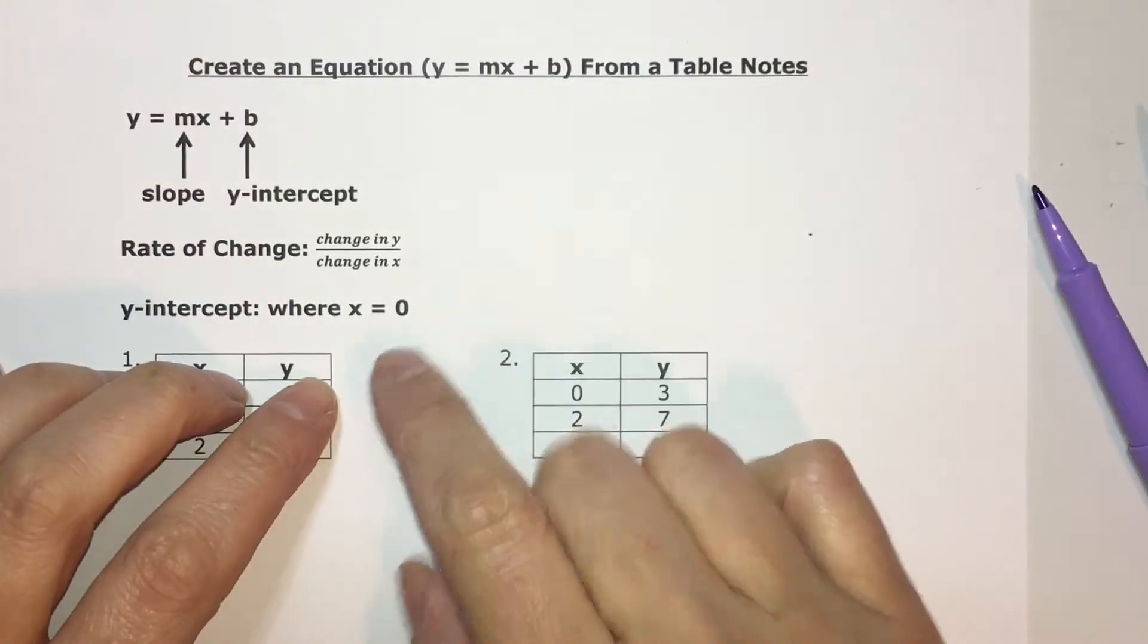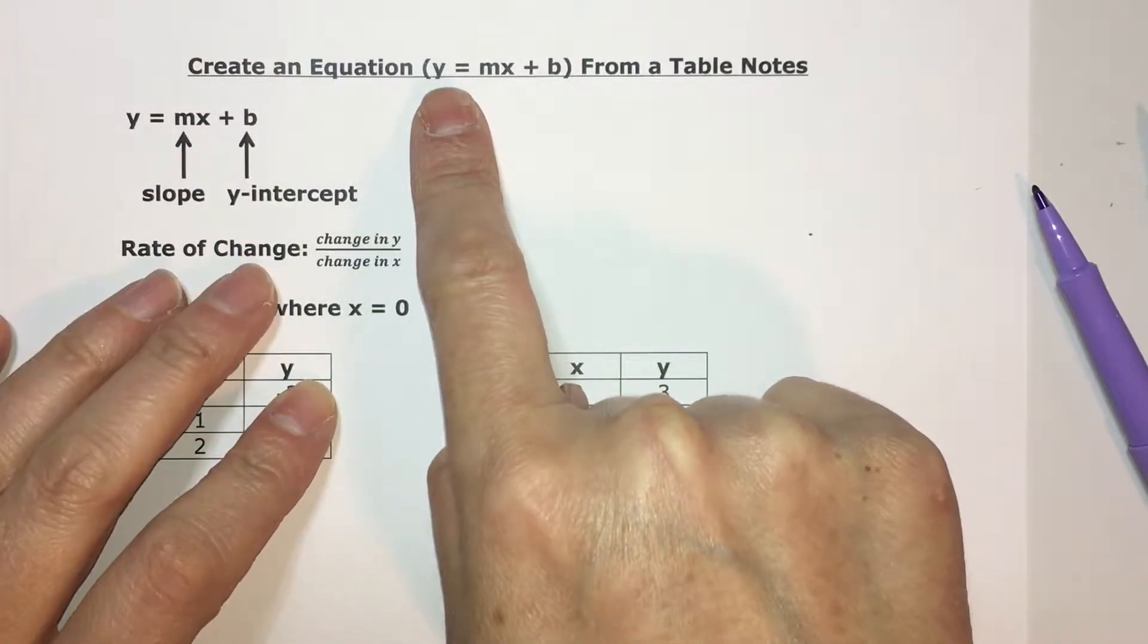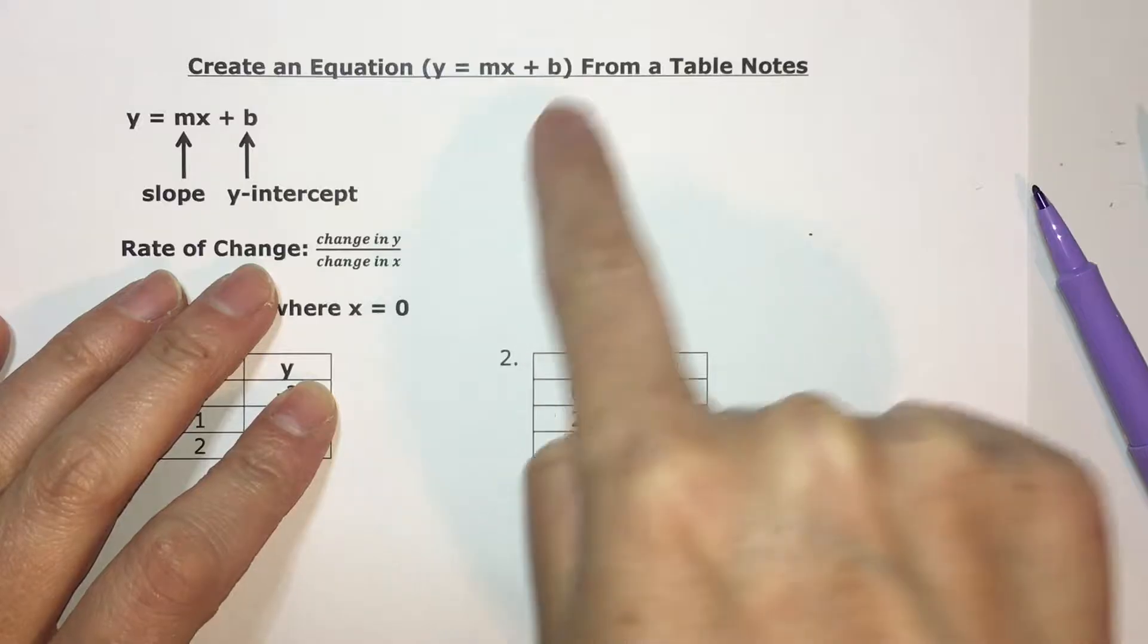Hi, I'm going to show you how to write an equation in slope-intercept form, y equals mx plus b, from a table.